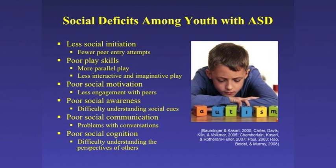Let's start with some of the social deficits commonly seen in adolescents and youth with ASD. Overall, these children tend to make fewer social initiations, meaning they enter peer interactions less frequently. When they are involved in play interactions, they tend to engage more in parallel play, meaning they're playing next to each other without really interacting. We see this even in our adolescent and young adult groups — it's something that stays with them over the course of the lifespan. They also tend to have less interactive play, less imaginative play, and they exhibit poor social motivation, meaning they're less engaged with peers their age and seeking out peer contact less frequently.